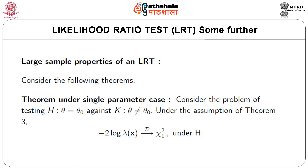We will now consider the large sample or asymptotic properties of an LRT. Theorem (single parameter case): Consider testing H: theta = theta_0 against K: theta ≠ theta_0. Under the assumptions of Theorem 3, minus twice log of lambda(X) converges in distribution to chi-square(1) under the null hypothesis.